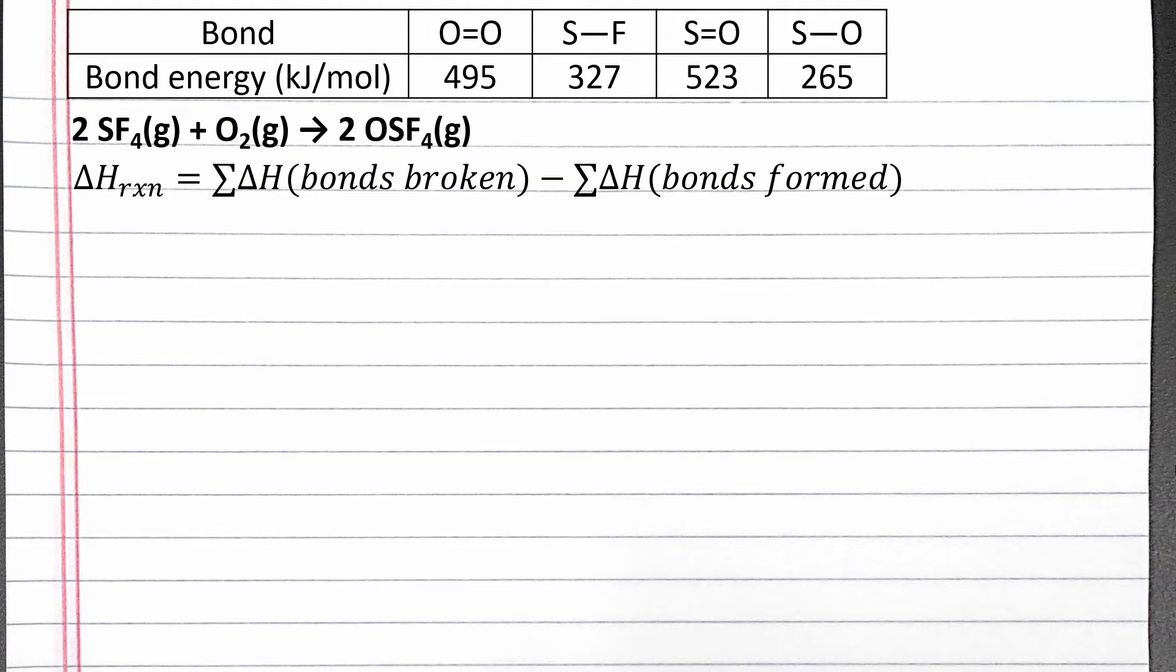If we're breaking all the bonds of the reactants and forming all the bonds of the products, we'll need the best Lewis structure for each substance in the reaction. Let's start by breaking all the bonds of the reactants.